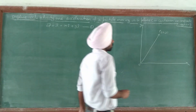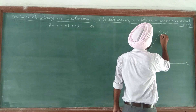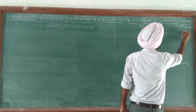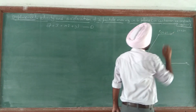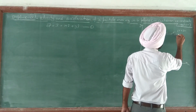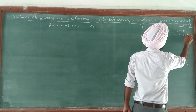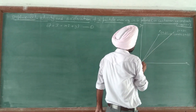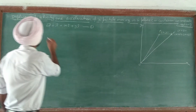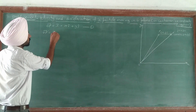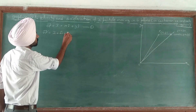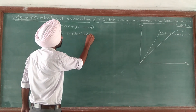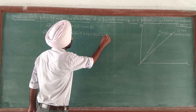Now suppose the particle moves from point P to some other point P-prime in time t plus dt. Then the position coordinates of point P-prime at time t plus dt are (x + dx, y + dy). Then the position vector OP-prime of the particle is: OP-prime = vector r + dr = (x + dx)·i-cap plus (y + dy)·j-cap. That is equation number 2.